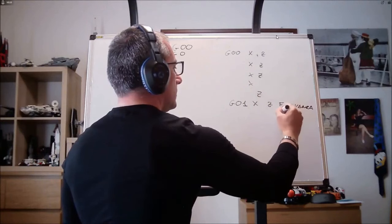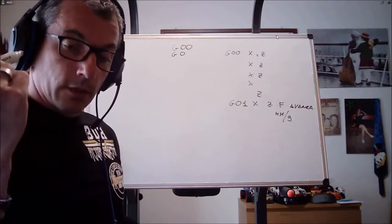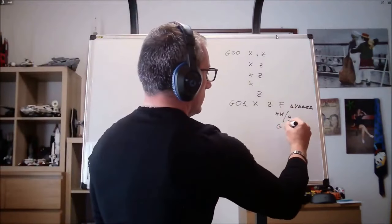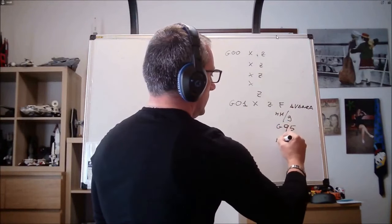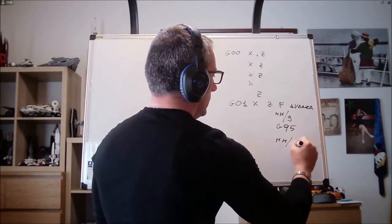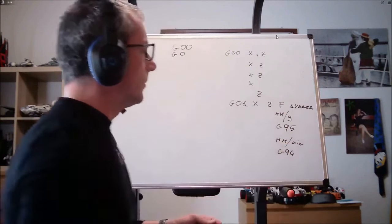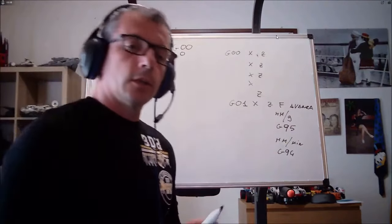What is G0, 1? G1 is linear interpolation in working movement. So X, Z, F, which stands for feed. The feed rate is expressed in millimeters per revolution if we programmed G95. It is expressed in millimeters per minute if we have programmed G94. These G95 and G94 can be changed at any time within the program.